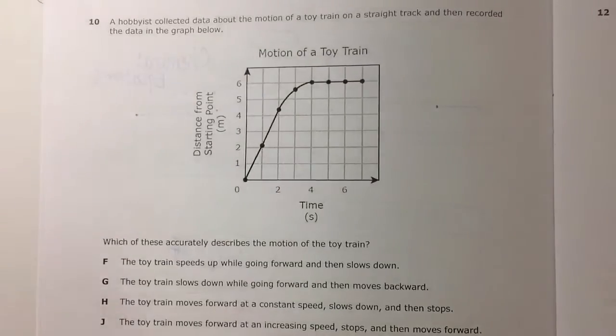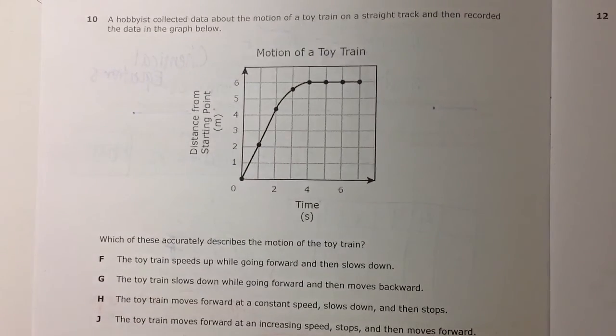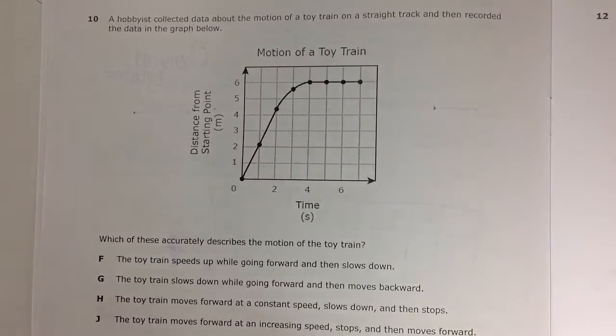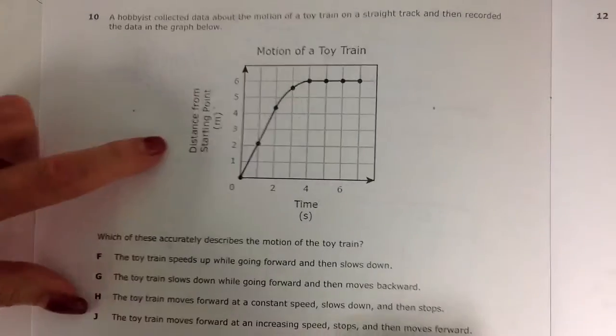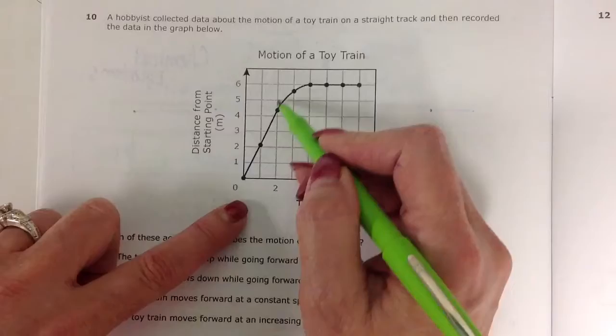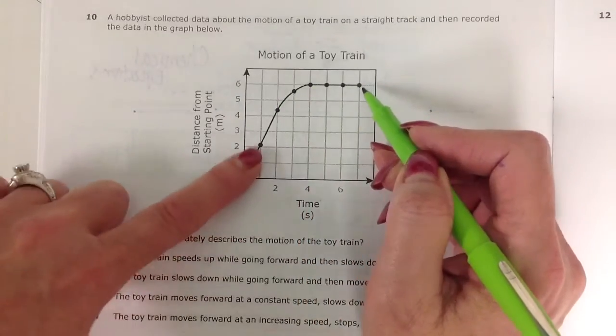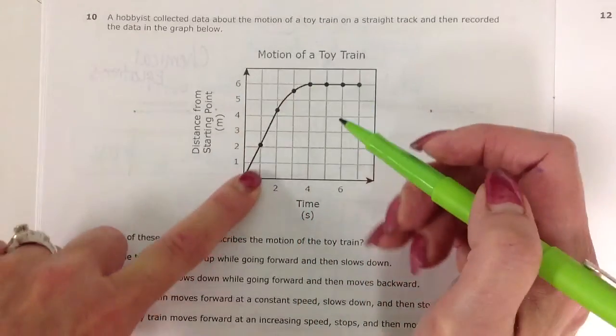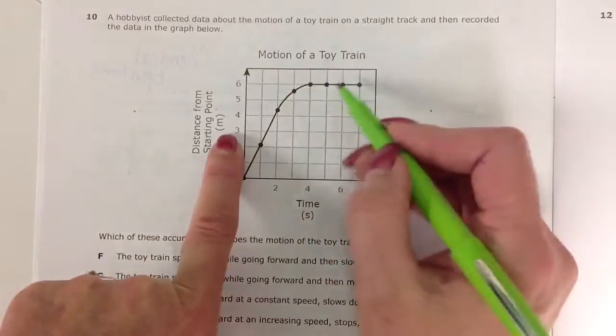A hobbyist collected data about the motion of a toy train on a straight track and then recorded the data in the graph below. So if we're looking at the data and the graph, it says the distance from the starting point. So this is the distance from the starting point the train traveled. The furthest it looks like it got is six meters.